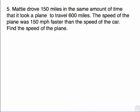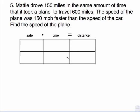So let's look at an actual problem. Maddie drove 150 miles in the same amount of time that it took a plane to travel 600 miles. The speed of the plane was 150 miles per hour faster than the speed of the car. Find the speed of the plane. A lot of people look at the problem like that and just freak because there's just so much in it. Any time you see something with miles and miles per hour, you need to think about distance equals rate times time.